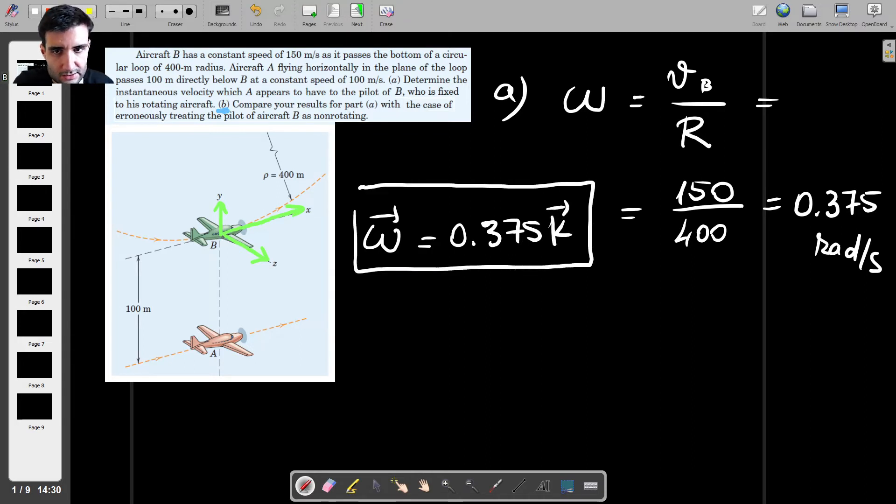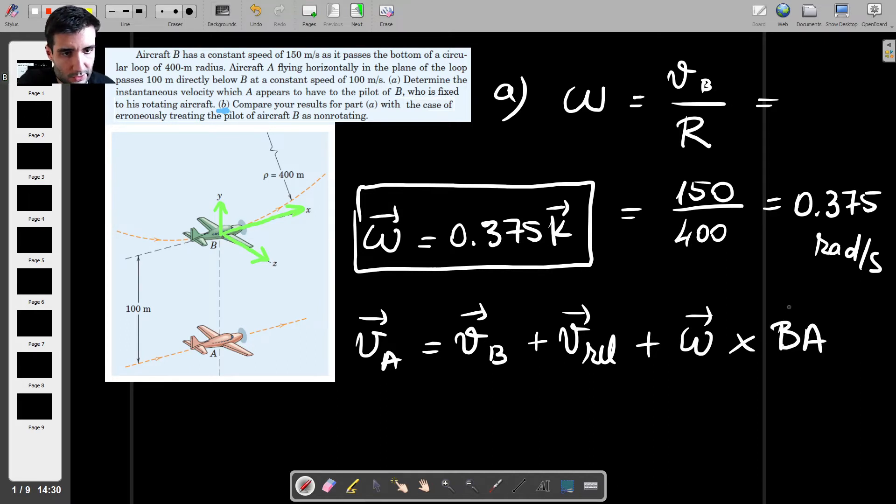So what this means is that the vector omega would be 0.375 multiplied by K. So it's a positive vector in the Z direction. So let's try to get an expression for the relative velocity of A with respect to B. And to do that, I'll just use Euler's equation for velocity, which is the following. So the velocity of A, the absolute velocity of A, is equal to the absolute velocity of B, plus the relative velocity that we have to find, and then plus omega cross BA.